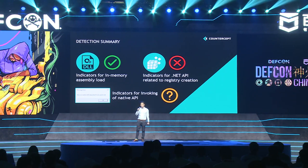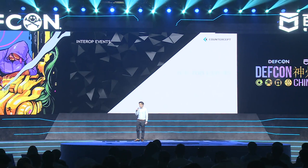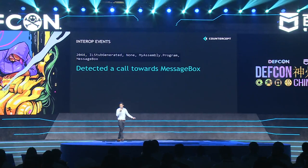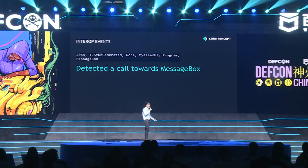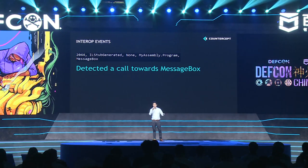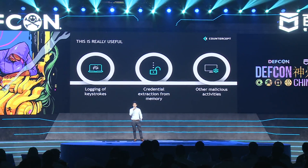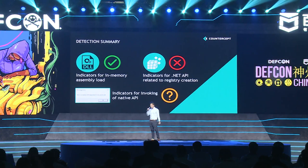For our final indicator — invoking native API — we can use an ETW event known as interop events. These are events generated whenever a .NET assembly makes a call to the Windows native API. For example, when a .NET assembly invokes MessageBox imported from user32.dll, an interop event is generated. Native API calls can be used for legitimate purposes like sending network connections, but threat actors can abuse them for keylogging, extracting credentials from memory, and other malicious activities. Having visibility on this is very useful. In total, we are able to detect two out of three indicators.